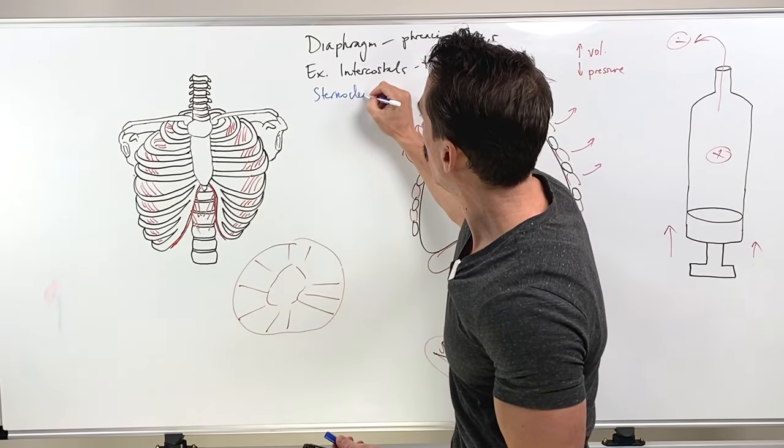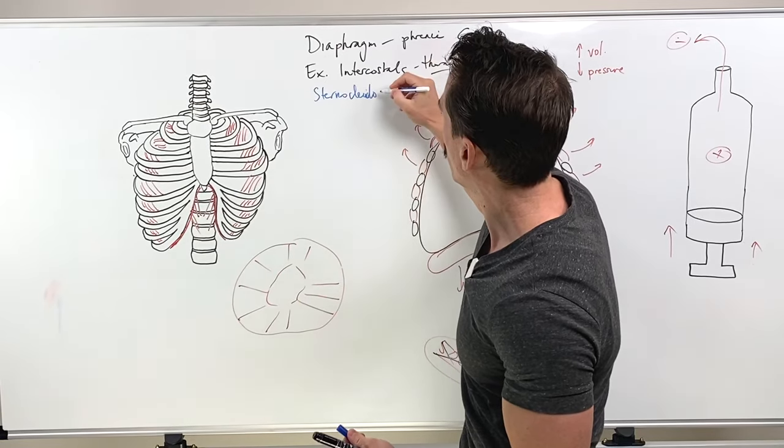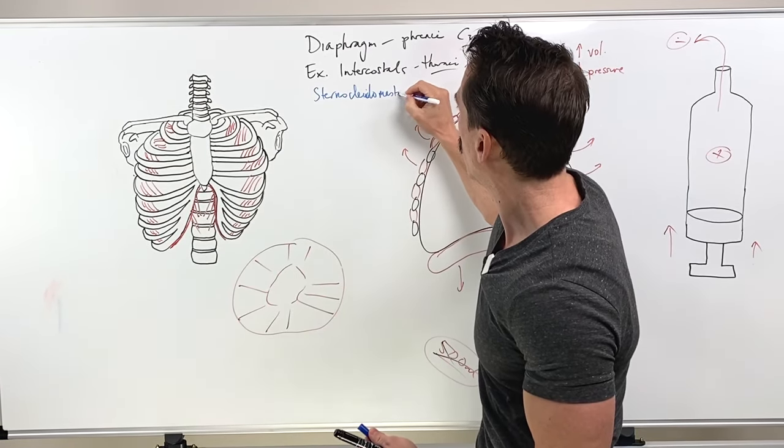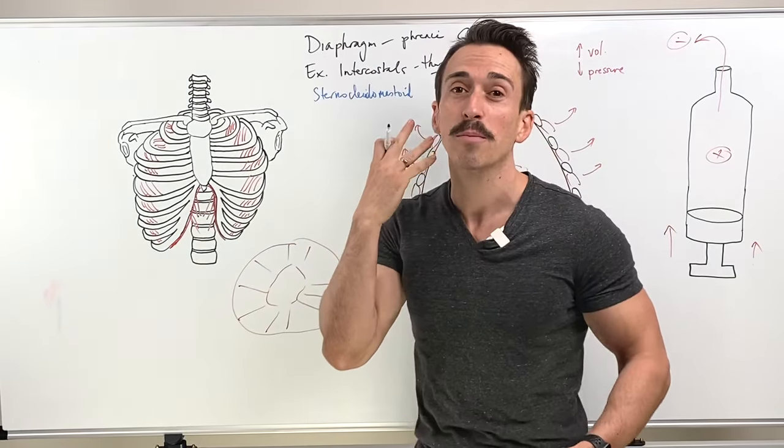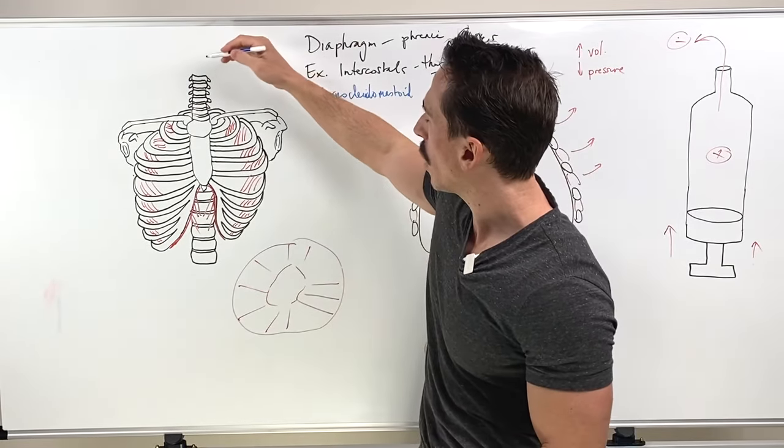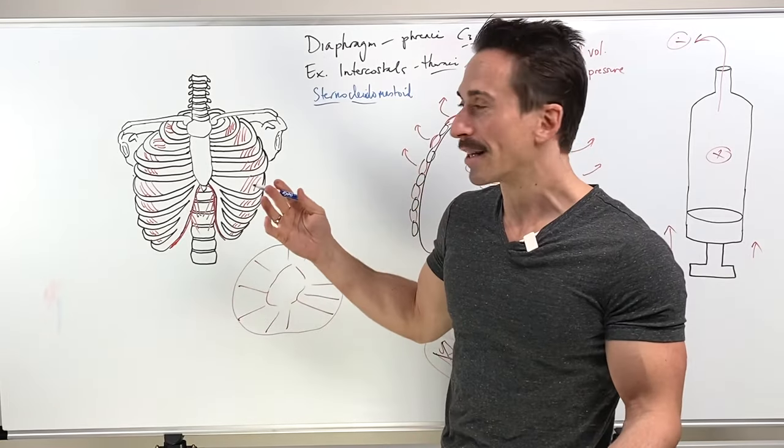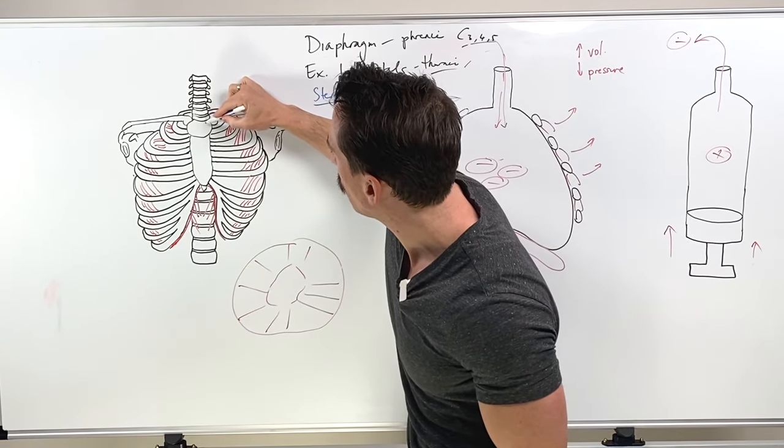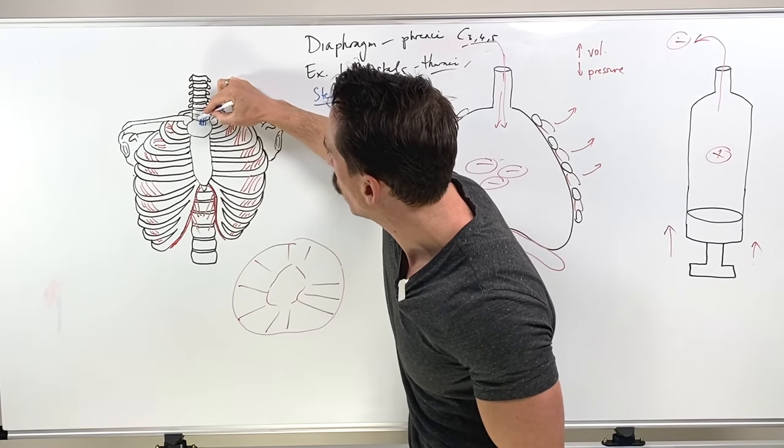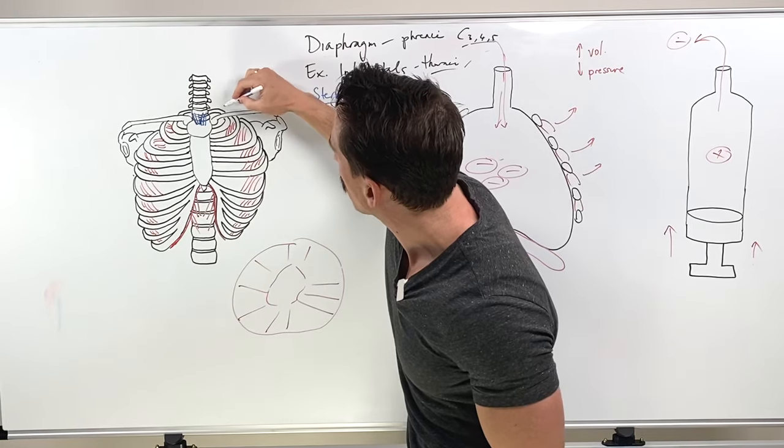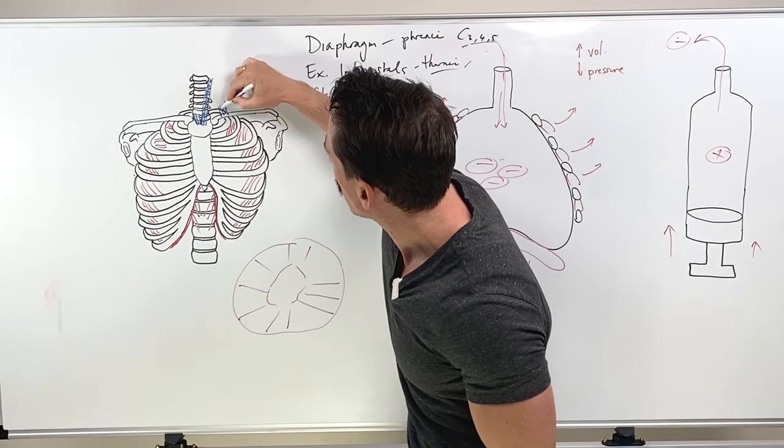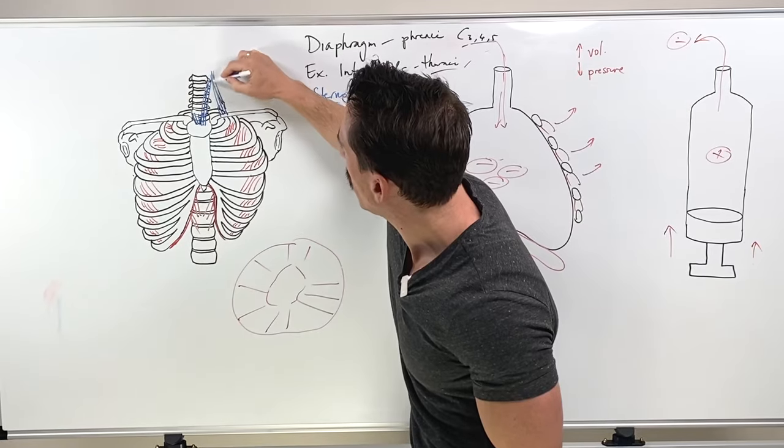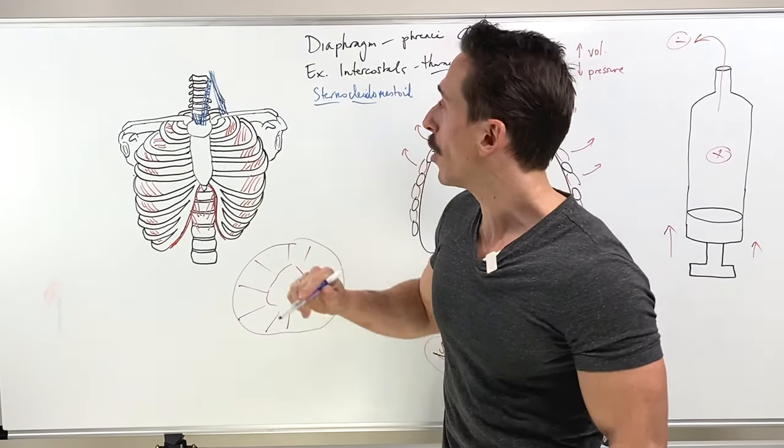Sterno means sternum. Cleido means clavicle. Mastoid is referring to the mastoid part of the temporal bone of the skull. So the sternocleidomastoid has its origins at the sternum and at the clavicle, particularly the manubrium here.